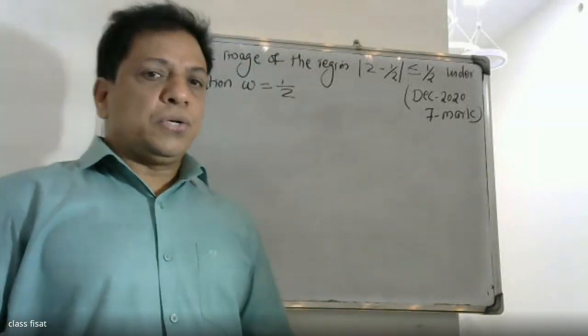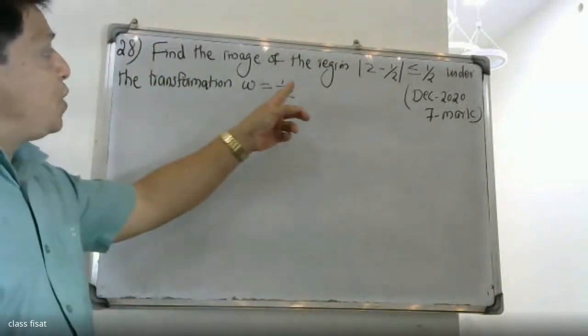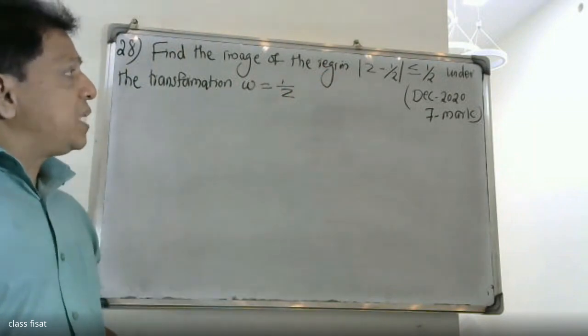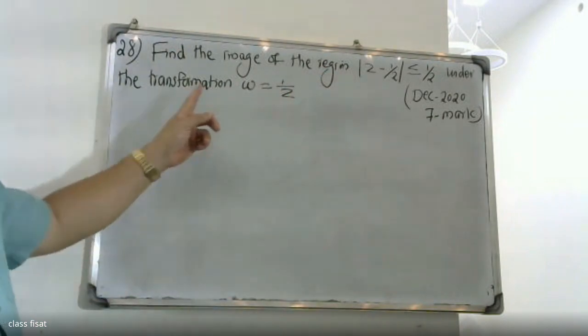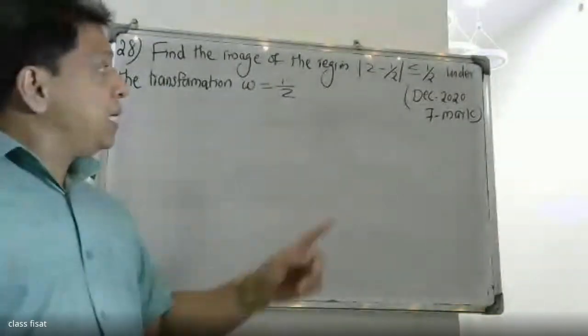Good morning, students. The question is: find the image of the region where mod(z + 1/2) is less than or equal to 1/2, under the transformation w = 1/z.